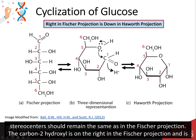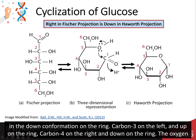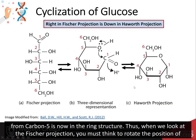The carbon 2 hydroxyl is on the right side of the Fischer projection and is in the down conformation on the ring structure. Carbon 3 is on the left and up on the ring structure. Carbon 4 is on the right and down on the ring structure. And the oxygen of carbon 5 is incorporated into the ring structure.